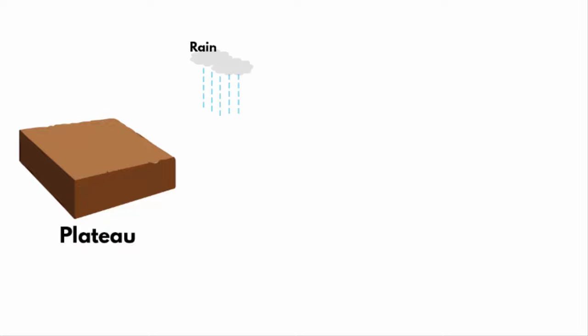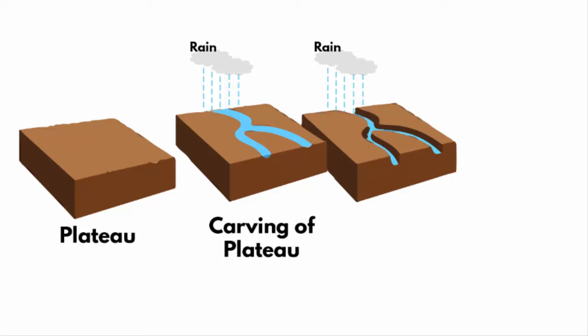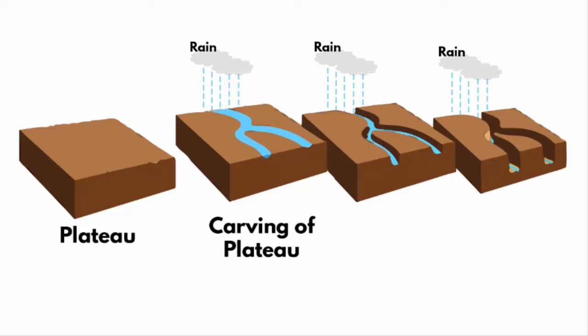Now try to carve this plateau with the help of rivers and glaciers. So basically with time, the river erodes the bedrock of a plateau by cutting deep channels in the bedrock. That's how even a gorge is formed.